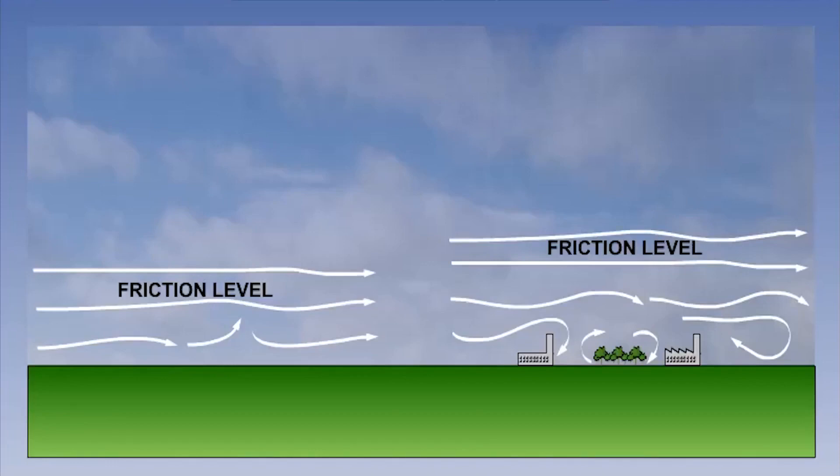This is common over land, especially around hills and towns. Notice that the friction layer is thicker and that the friction level is higher.